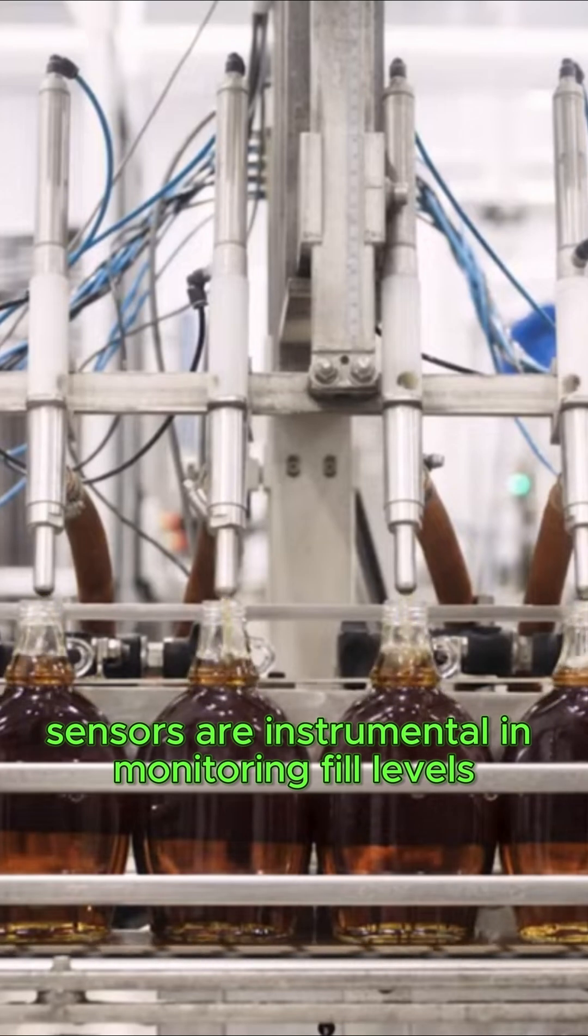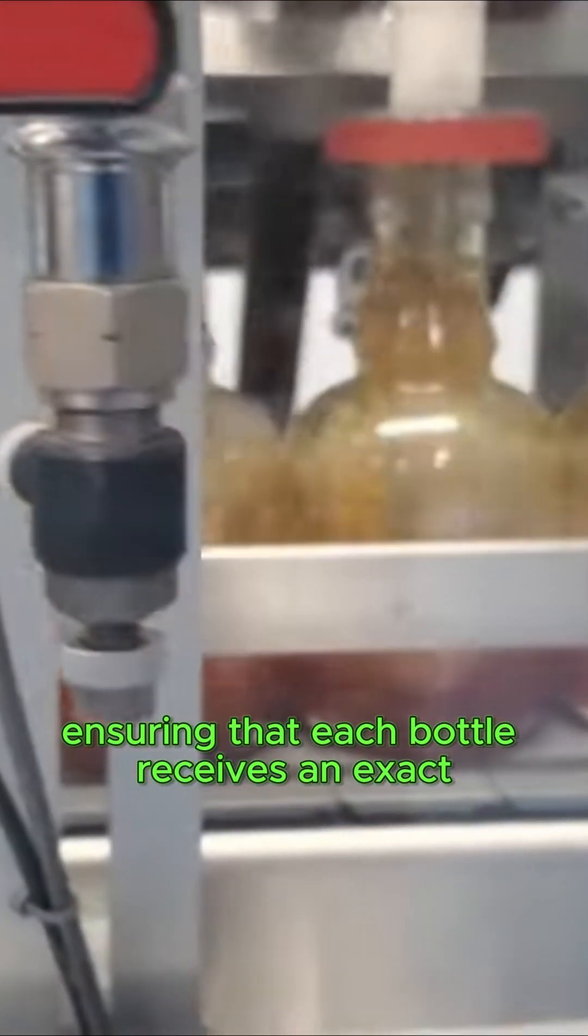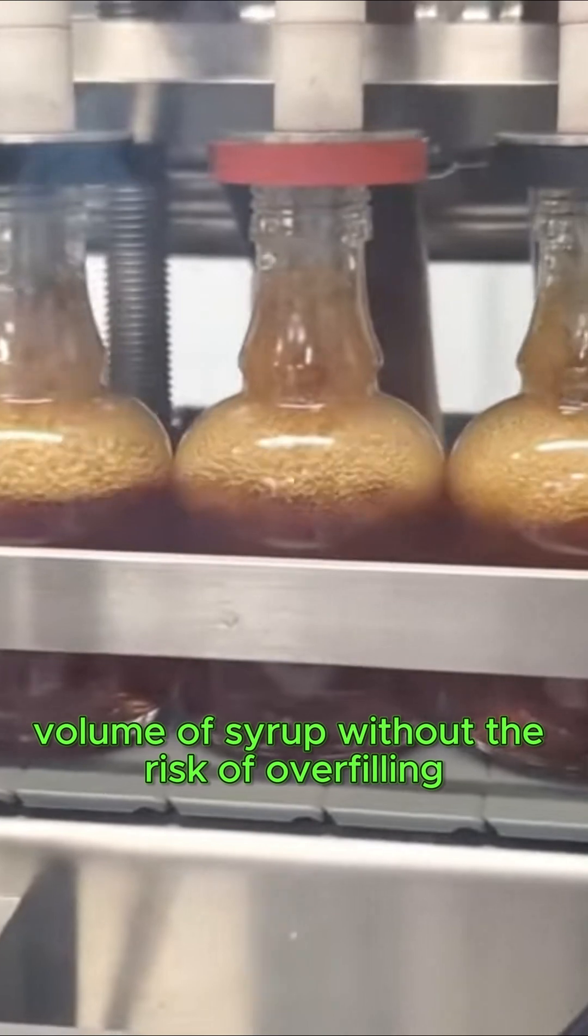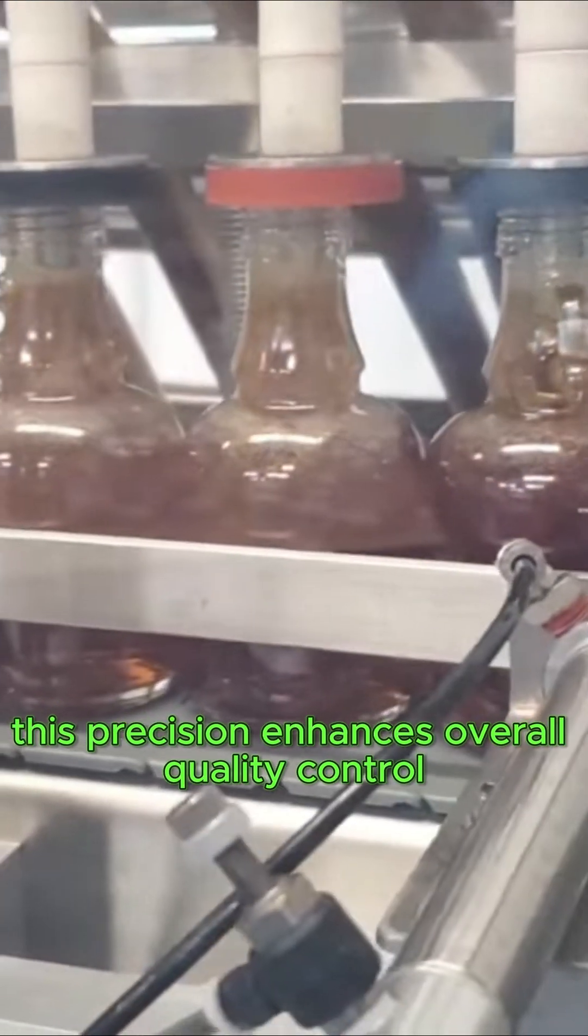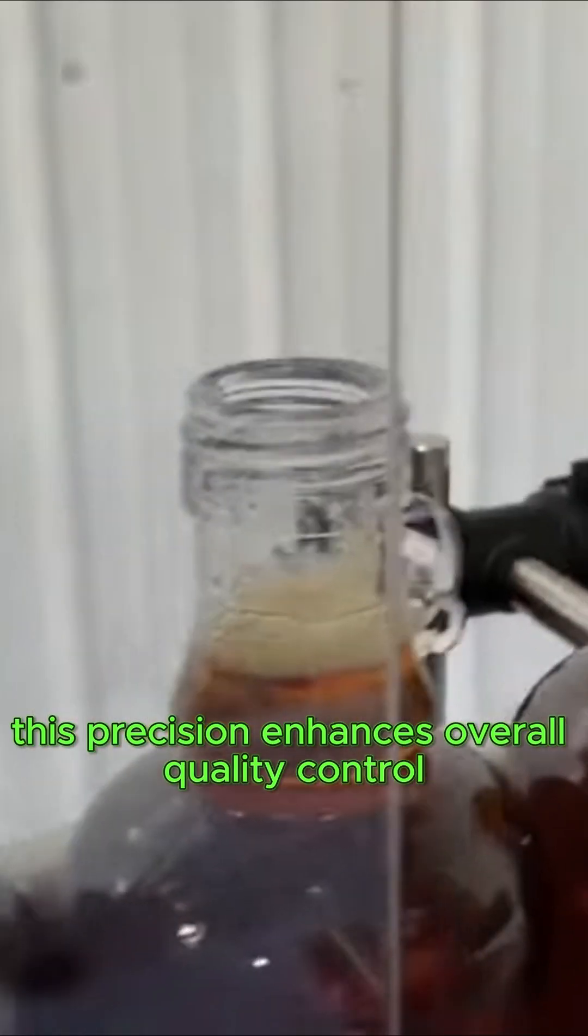Sensors are instrumental in monitoring fill levels, ensuring that each bottle receives an exact volume of syrup without the risk of overfilling. This precision enhances overall quality control in the production process.